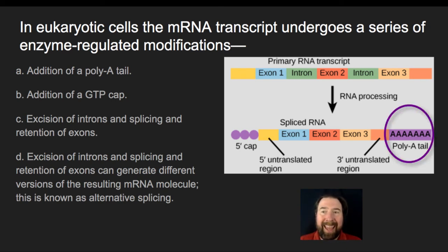So first of all, we're going to be adding a poly-A tail. We're also going to be adding a GTP cap. So we have this what's called the 5' or GTP cap over here, and we have the poly-A tail down here. These are going to help protect the ends of this RNA.